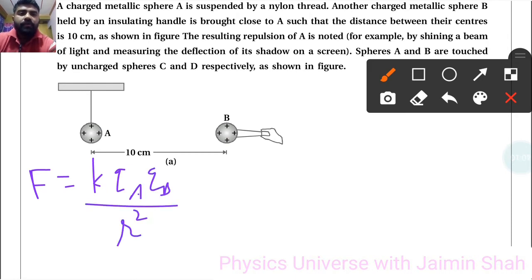Now here with A, C is there. It is same sphere as A. So now if early charge is QA, now it is distributed like QA by 2, QA by 2.